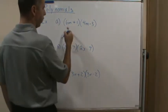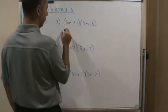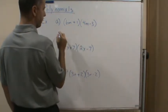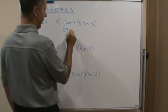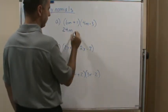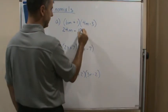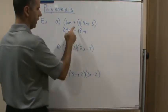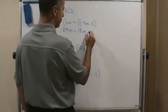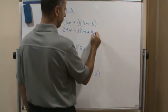So if I do this, it gives me: 6m times 4m is 24m, then 6m times negative 3 is minus 18m, then 1 times 4m is just 4m, and